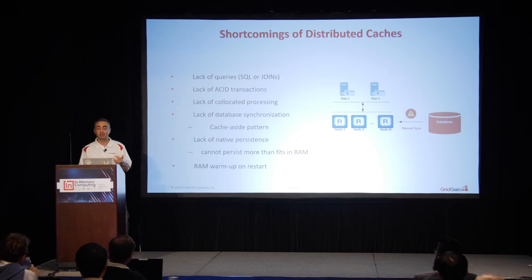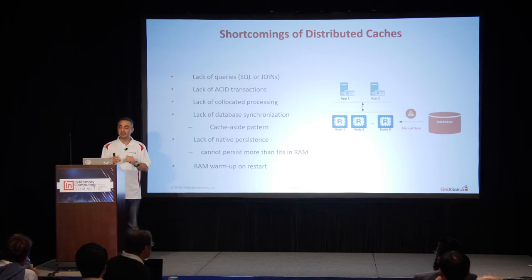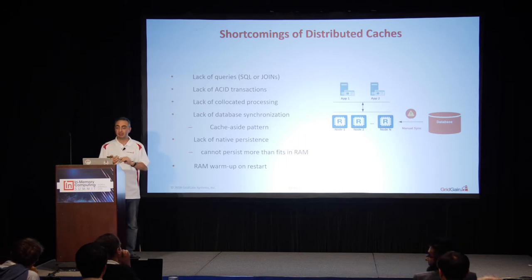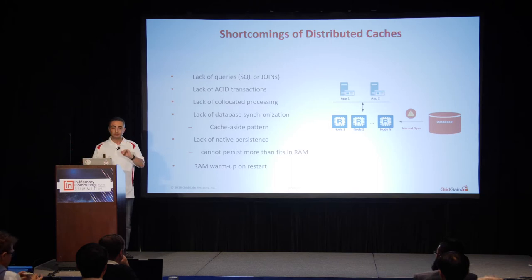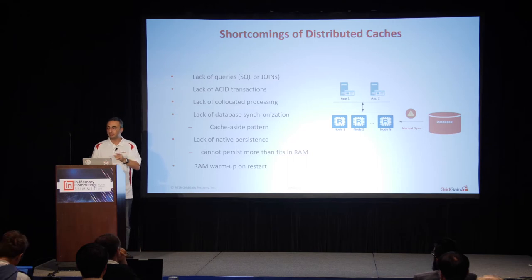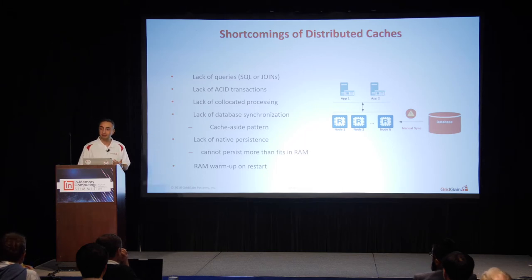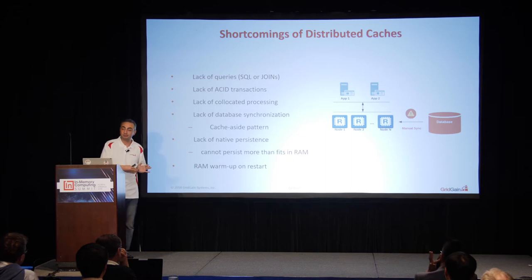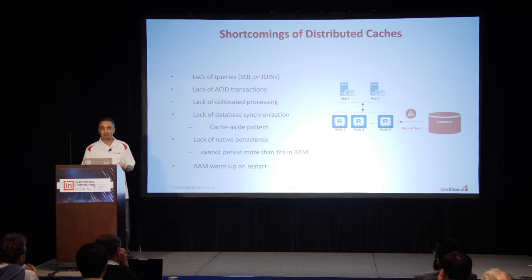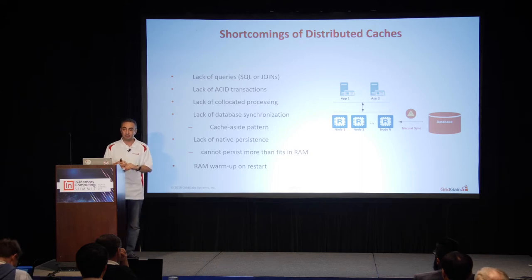Lack of native persistence is another issue. Most distributed in-memory products have some persistence, but they cannot scale beyond what can fit in RAM. You can only store as much data as you can fit in RAM across a cluster. For example, with 100 GB per server across 10 servers, you have 1 terabyte of RAM. If you need to store 2 terabytes, you can't. Additionally, whenever you bring up the system, you have to warm up the cache — without being warmed up, the cache does not work.